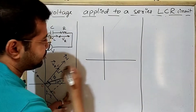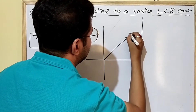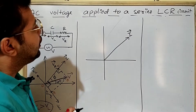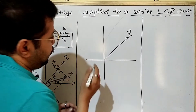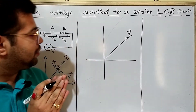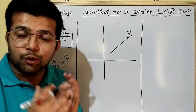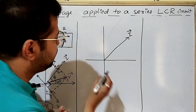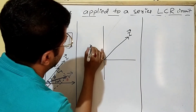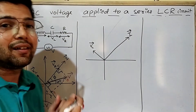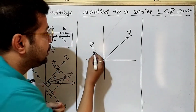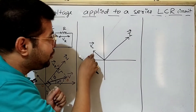Say this is the x-axis and this is the y-axis. This is the phasor of current. We know that in the case of a pure inductive circuit, the voltage across the inductor leads current by pi by 2. So you have to draw the voltage phasor of the inductor VL ahead of current by pi by 2, so you write VL here.